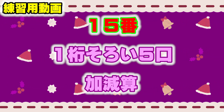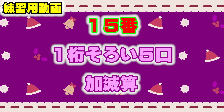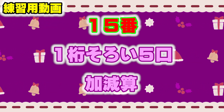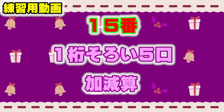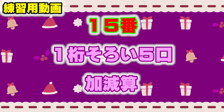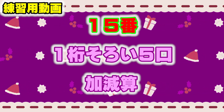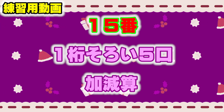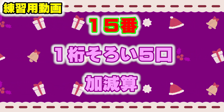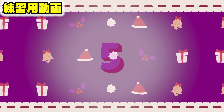問題15: 1桁揃い、極致、加減算の問題です。Start with 5, 9, minus 4, minus 8, and 2. 15番の回答欄に答えを書いてください。(Problem 15: uniform 1-digit, extreme value, addition and subtraction problem. Please write your answer in the answer column for question 15.)